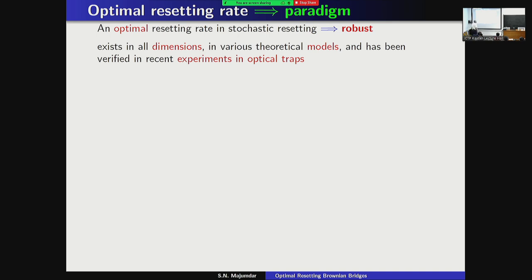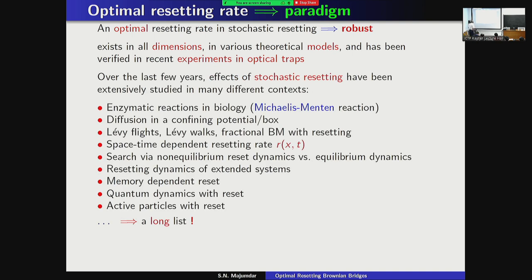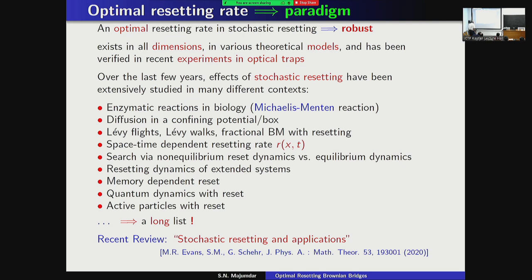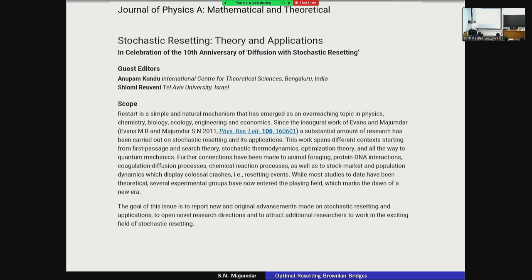This optimality is a very robust phenomenon — it exists in all dimensions, in various theoretical models, and has been verified in experiments using optical traps by groups in Tel Aviv and ENS Lyon. Over the last few years it has been studied extensively in many different contexts, including active particles and quantum dynamics. There is a recent review article by myself, Martin Evans, and Gregory Sher, and this year a special J. Phys. A issue on ten years of diffusion and stochastic resetting was edited by Onupam Kundu and Salomi Rubini.